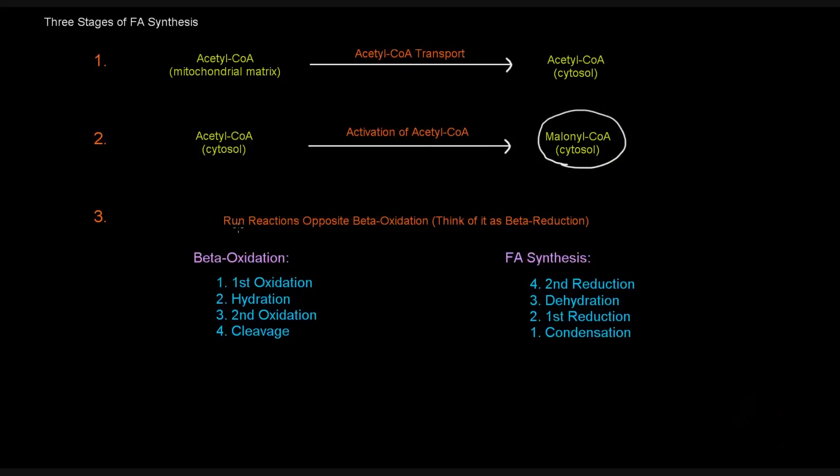Which brings me to the third stage. The third stage is essentially running the reactions that are opposite beta-oxidation. I like to think of it as beta-reduction, although I don't think it's actually called that. If you recall, beta-oxidation—we'd start with an acyl-CoA, we'd have four steps: the first being the first oxidation, then a hydration step in which we'd add water, and then the third step was a second oxidation, and the fourth step was a cleavage where we'd cut off an acetyl-CoA.